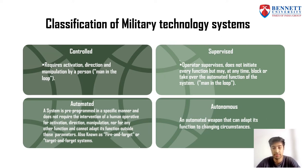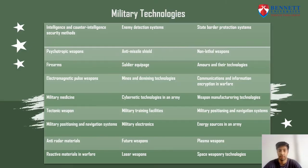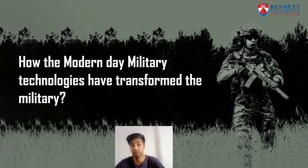An Autonomous system is an automated weapon that can adapt its function to changing circumstances — it is simply an AI that can think on its own and change according to the circumstances. For example, robots. These are the various areas and fields where military technologies are involved, such as intelligence and counterintelligence security methods, psychotropic weapons, enemy detection systems, state border protection systems, and many other areas.